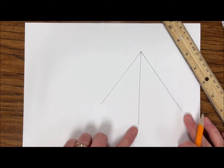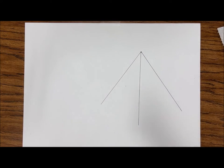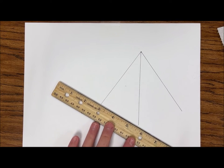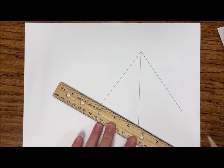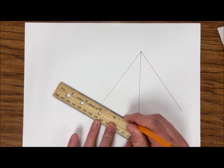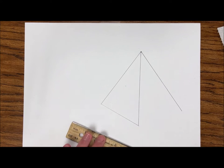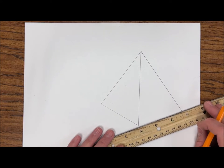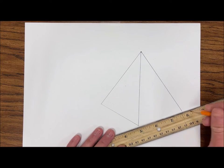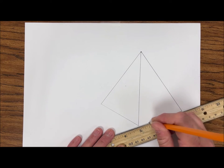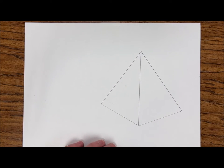All right, so we should have sort of a tent shape here. Then we're going to use our ruler again to connect those bottom two lines, and again on the other side. And now I have my pyramid shape.